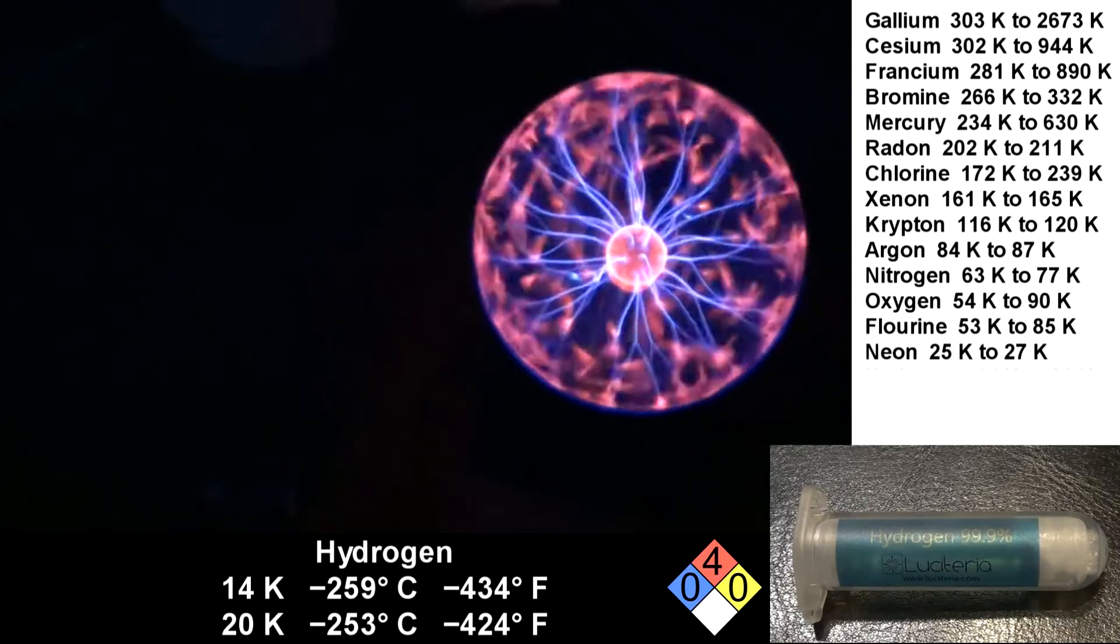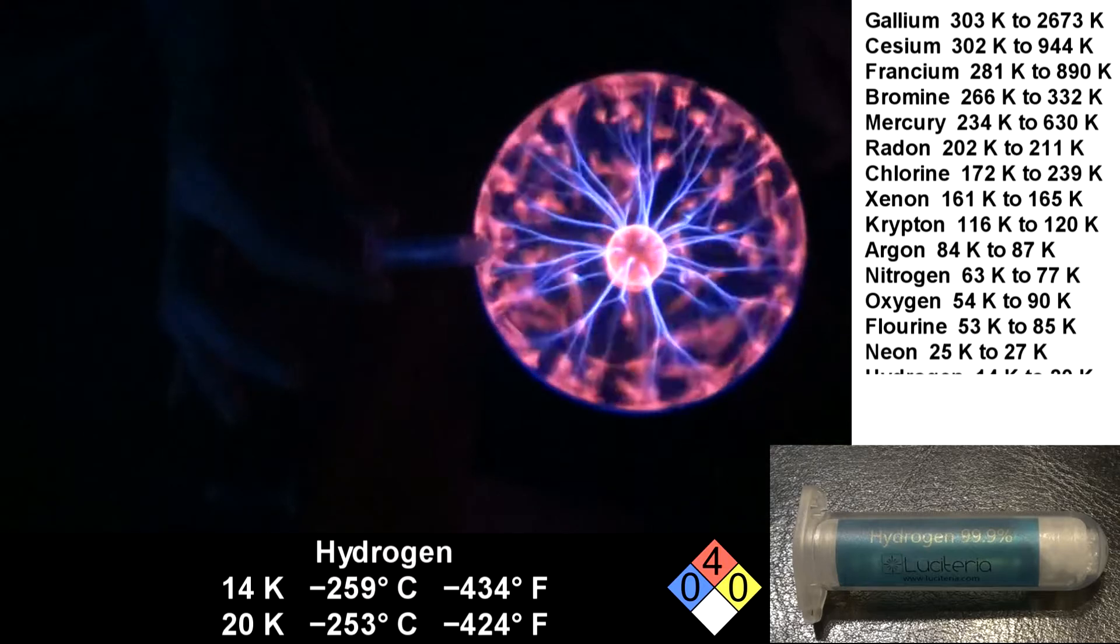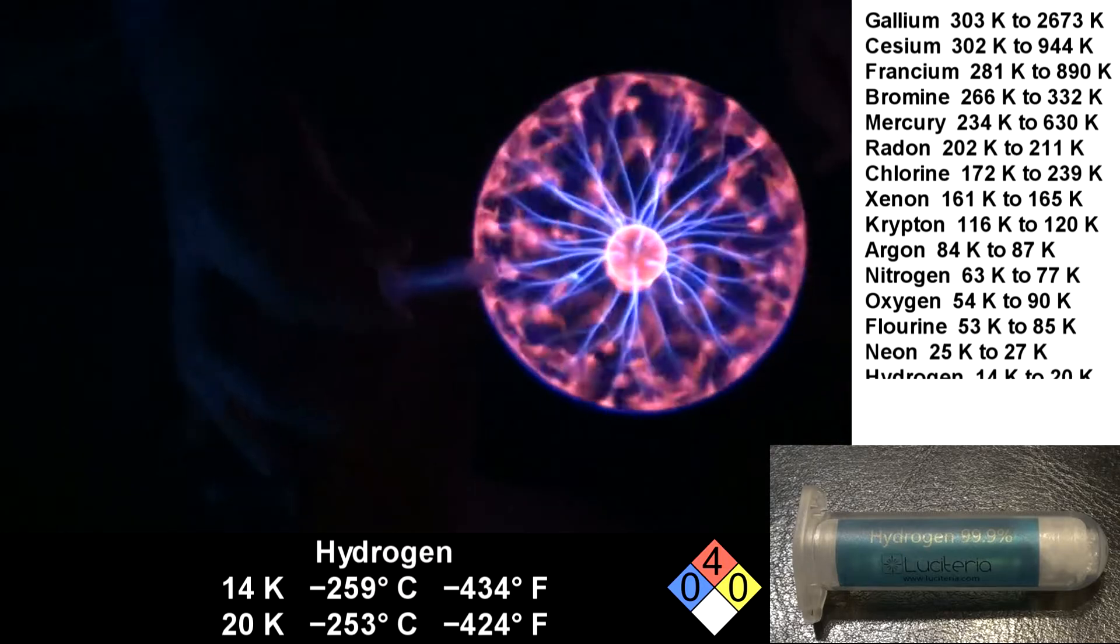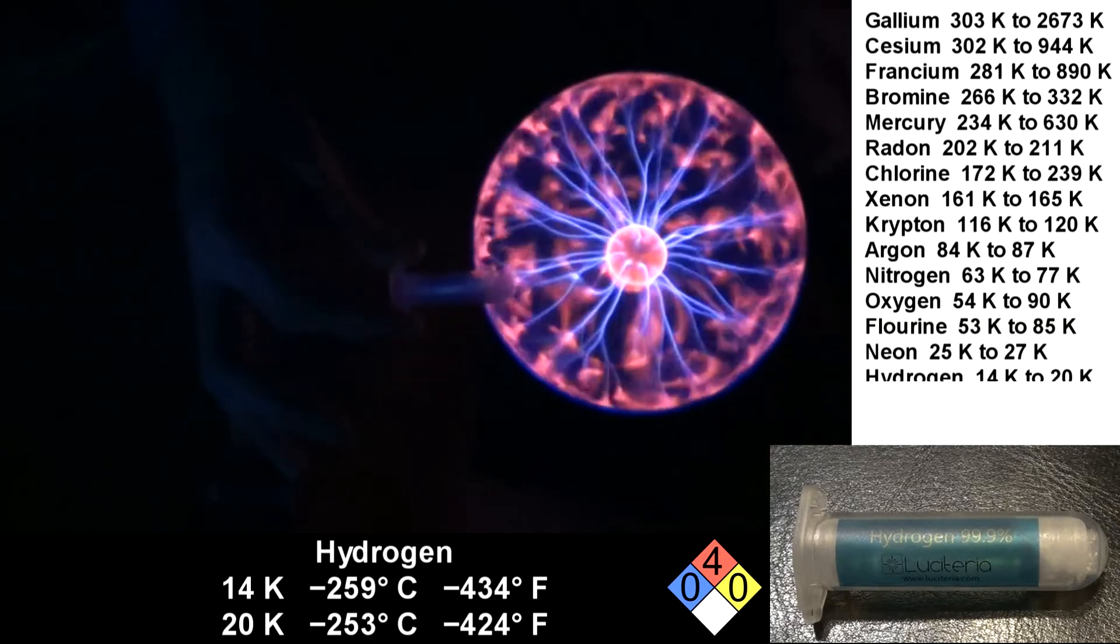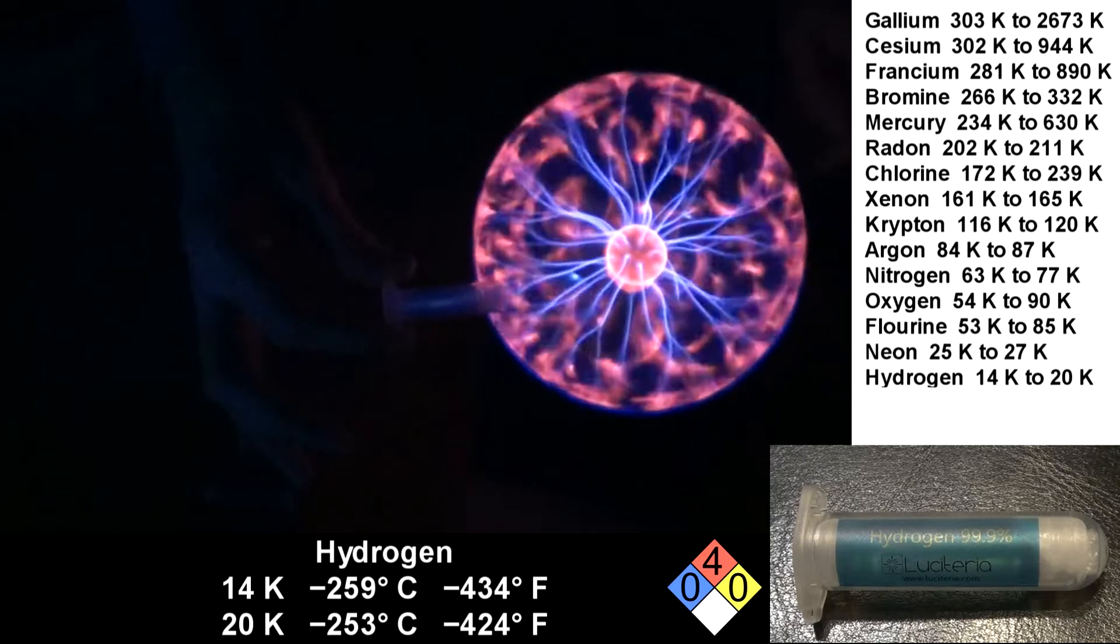Hydrogen is flammable, but this is such a tiny amount I doubt it'll be a problem. It's not even enough to make this tube float away. Though that would be fun to see. I wonder how much it would take. Anyway, hydrogen is in liquid form from 14 Kelvin up to 20 Kelvin.